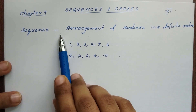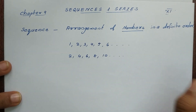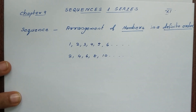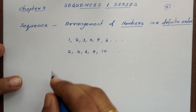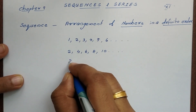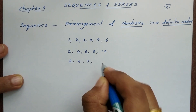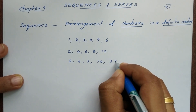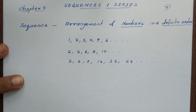A sequence is a set of numbers. Here is another sequence: 2, 4, 8, 16, 32, 64, etc. This is also a sequence.